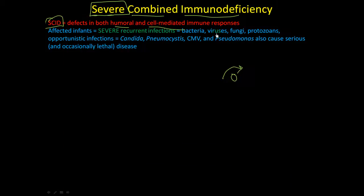Both humoral and cellular pathways are knocked out in severe combined immunodeficiency. Infants are severely affected, experiencing severe recurring infections from bacteria, viruses, fungi, protozoa, and opportunistic infections including Candida, Pneumocystis, cytomegalovirus, and Pseudomonas.